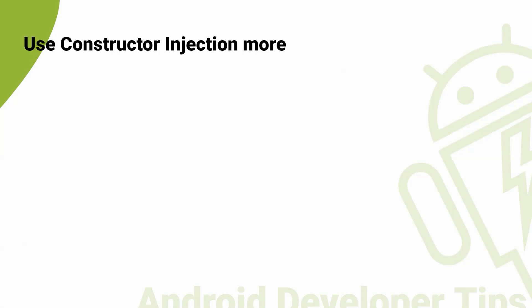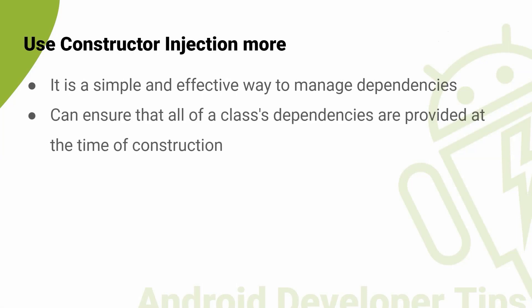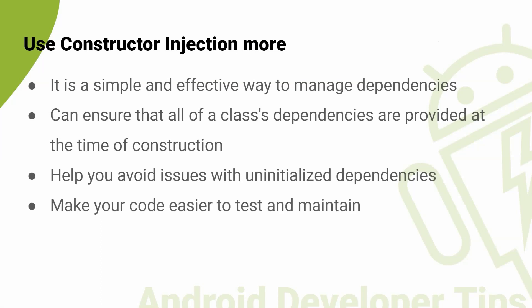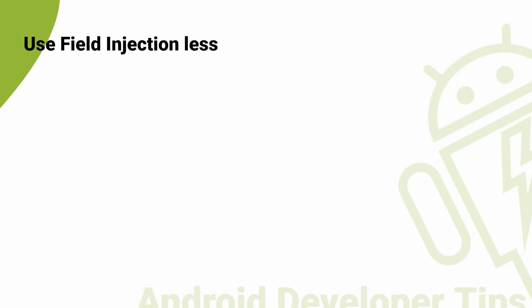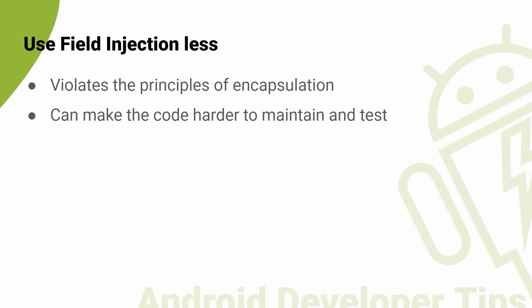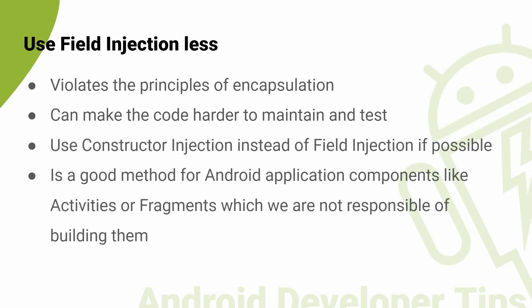Use constructor injection more. Constructor injection is a pattern where dependencies are passed to a class through its constructor. This is a simple and effective way to manage dependencies in your app. By using constructor injection, you can ensure that all of the class's dependencies are provided at the time of construction, which helps avoid issues with uninitialized dependencies and makes your code easier to test and maintain. Field injection, where dependencies are injected into a class's fields using annotations like @Inject, is not recommended as it violates the principle of encapsulation. However, there may be cases where field injection is necessary, such as when injecting dependencies into framework components like activities and fragments.